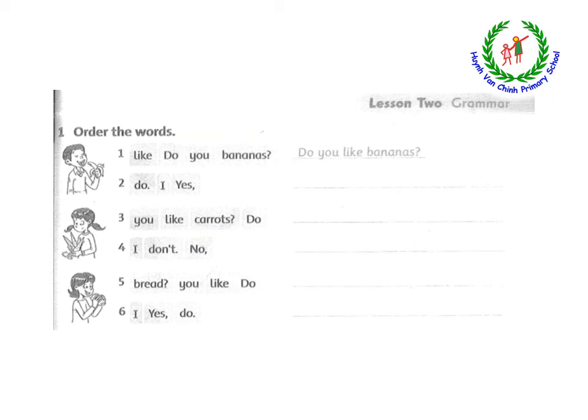Now, open your workbook. Look at exercise number 1: Order the words. Ở bài tập số 1, các em sẽ sắp xếp các từ lộn xộn để hoàn thành một câu có nghĩa. Number 1: 'Do you like bananas?' — Bạn có thích chuối không? Tương tự, các câu còn lại, các em sẽ sắp xếp thành một câu dựa trên những từ đã được cho.